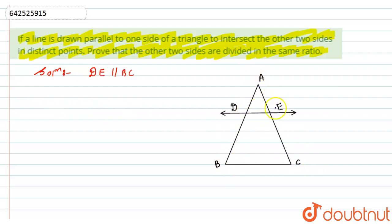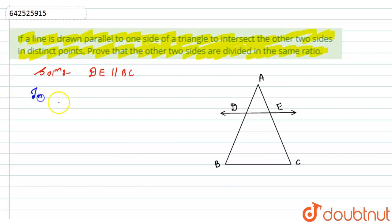If we prove them as similar triangles, then we can prove their sides will be in proportion. So let's start. In triangle ABC and in triangle ADE, let's identify the angle relationships.